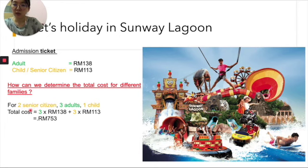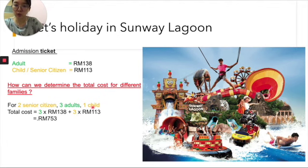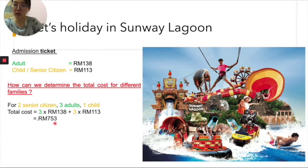My family consists of two senior citizens who are my parents, three adults — me and my sisters — and one child. So altogether, I have to pay for three adults: 3 multiplied by 138 ringgit Malaysia, plus three more — one child and my parents, two of them — multiplied by 130 ringgit Malaysia. The total price I'm going to pay to Sunway Lagoon is 753 ringgit Malaysia.